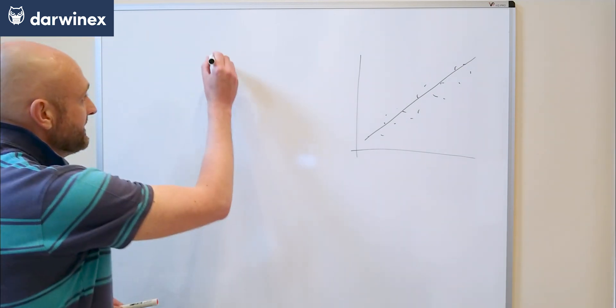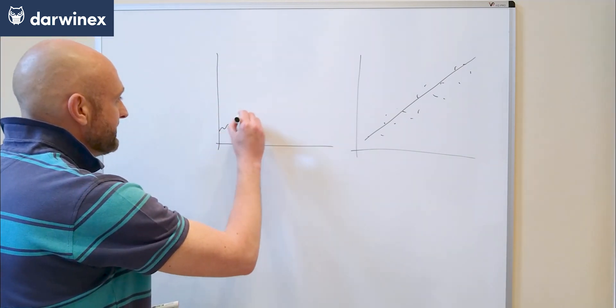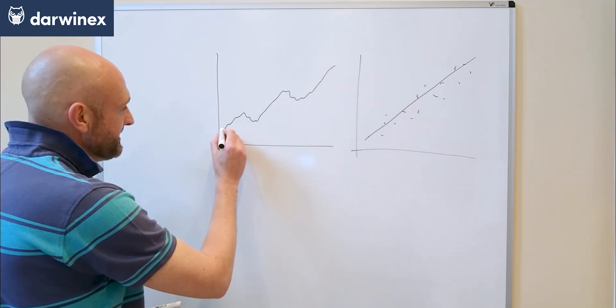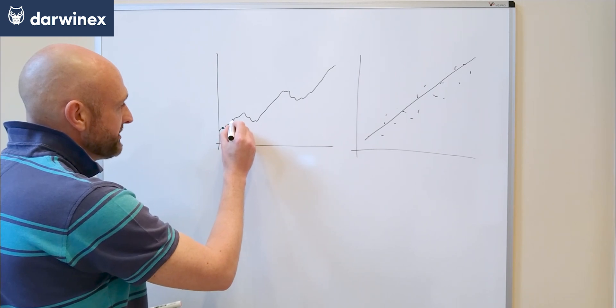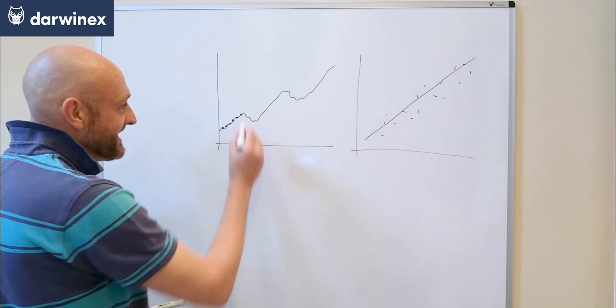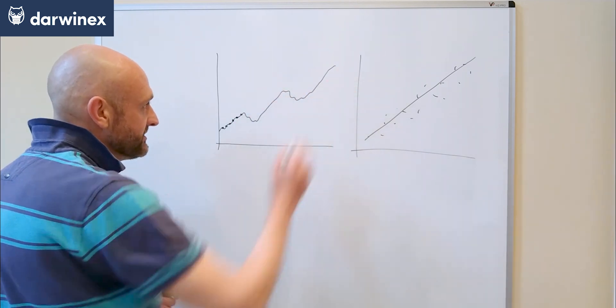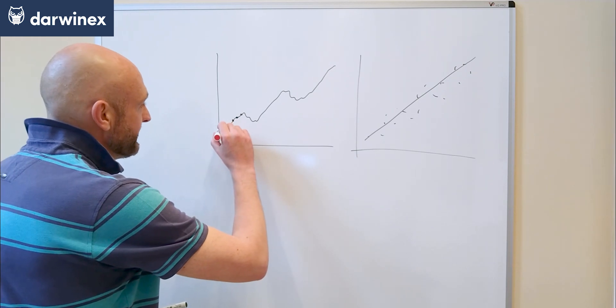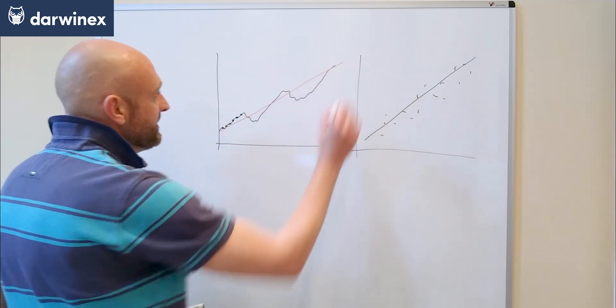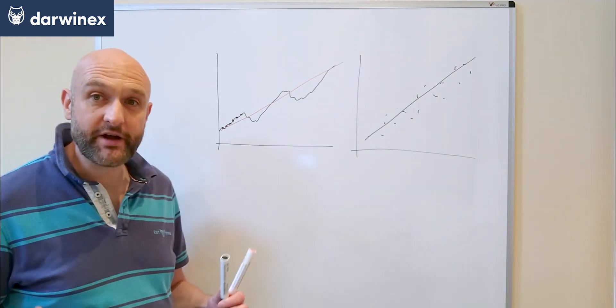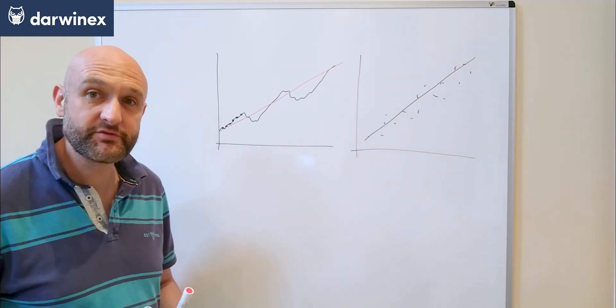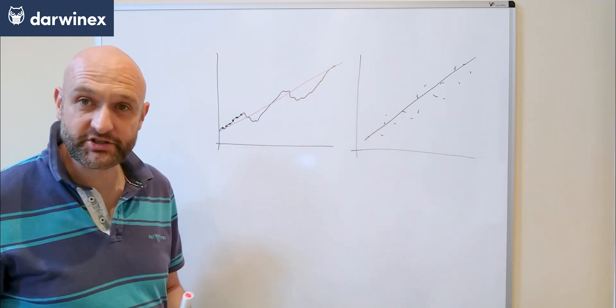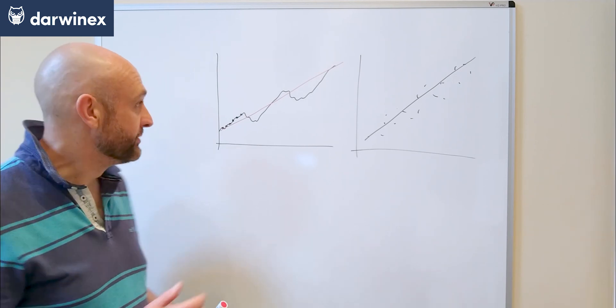We can now apply this technique to our equity curve itself. As an example, if we have this curve here we can sample the equity at certain points—this might be once per hour or once per day depending on how long your back test is. We can do that for the entire equity curve and then draw a line of best fit through that equity curve using linear regression.